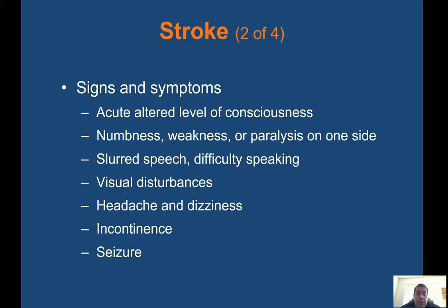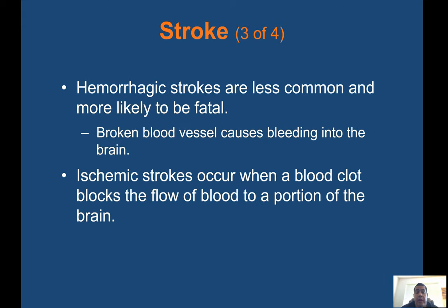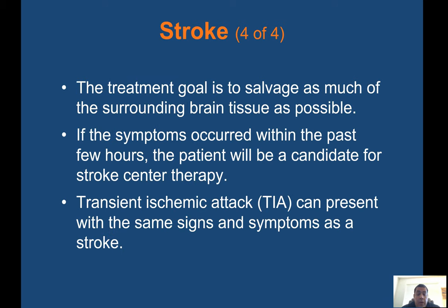Signs and symptoms of stroke include acute altered level of consciousness, numbness, weakness, or paralysis on one side, slurred speech, difficulty speaking, visual disturbances, headache and dizziness, incontinence, and seizure. Hemorrhagic strokes are less common but more likely to be fatal — caused by a broken blood vessel bleeding into the brain. Ischemic strokes occur when a blood clot blocks blood flow to a portion of the brain. The treatment goal is to salvage as much surrounding brain tissue as possible. If symptoms occurred within the past few hours, the patient may be a candidate for stroke center therapy. Transient ischemic attacks (TIA) can present with the same signs and symptoms as a stroke.